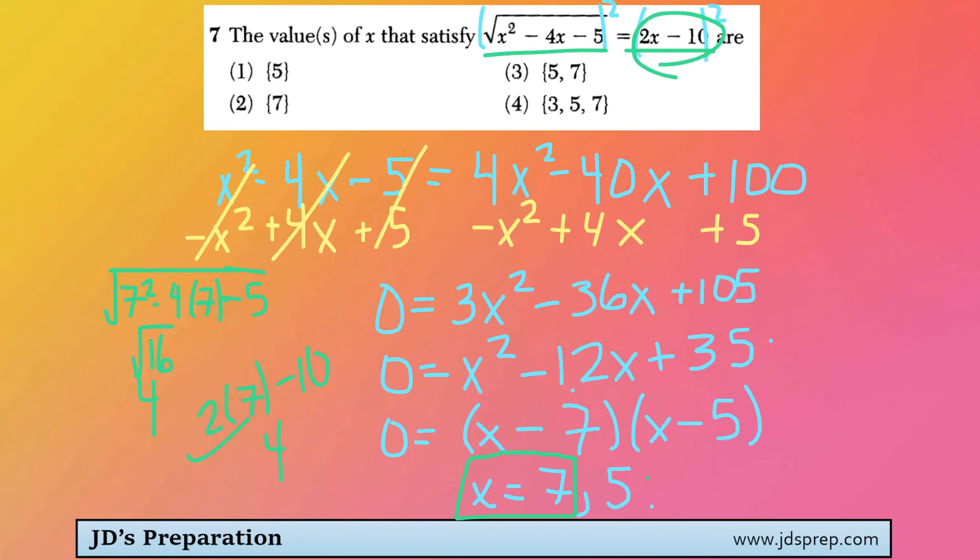And now let's check 5. We'll be taking the square root of 5 squared minus 4 times 5 minus 5. That comes out to the square root of 0, which is 0. And then comparing that to 2x minus 10, so 2 times 5 minus 10. That also gives us an answer of 0. So that also checks out.